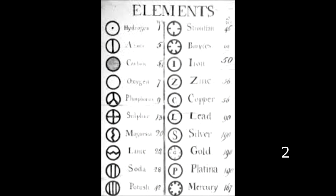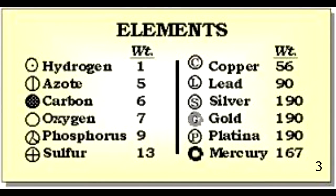Here's a diagram showing the symbols Dalton used in his book to identify 20 elements. Looking at the first 10 elements, you can see that Dalton placed numbers next to each one — these numbers were relative atomic masses, meaning masses that relate to hydrogen. He gave hydrogen a mass of one because hydrogen is the lightest element known. However, none of these relative atomic masses were accurate.